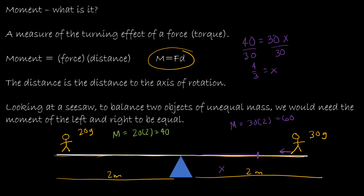So if I put my little guy right about here, now all of a sudden this is much more fun for everybody, because now the moments on each side are equal. The moment is 30 times 4/3, which is 40. Because the moments are equal, I can actually balance those kids up in the air.